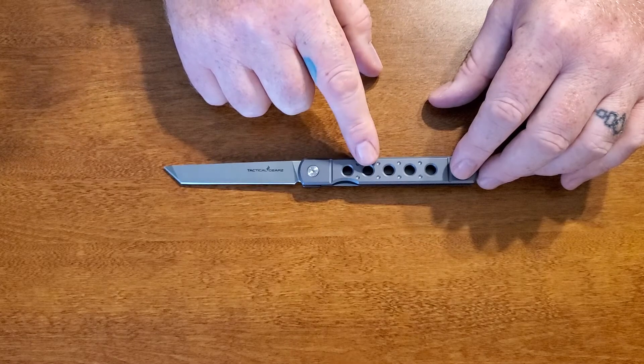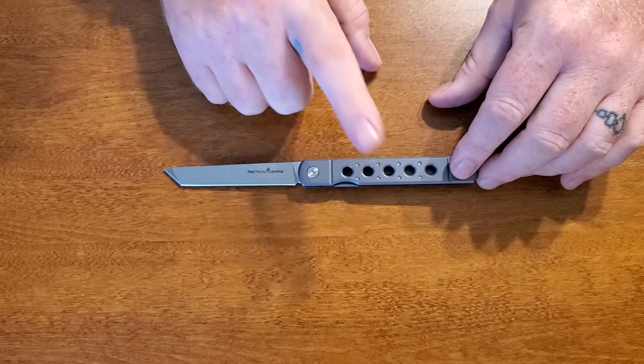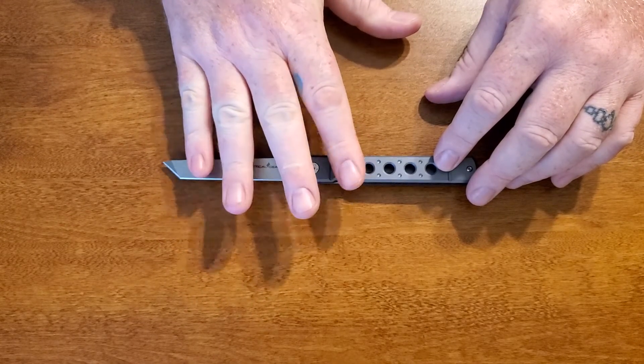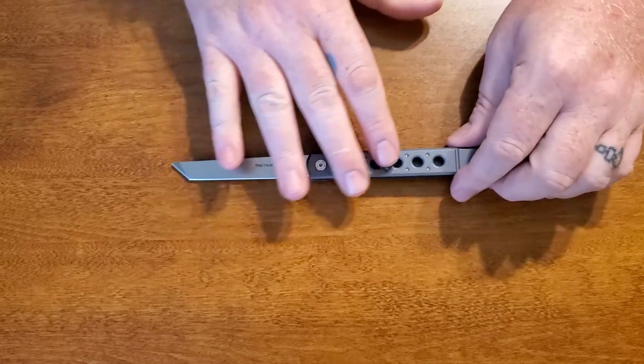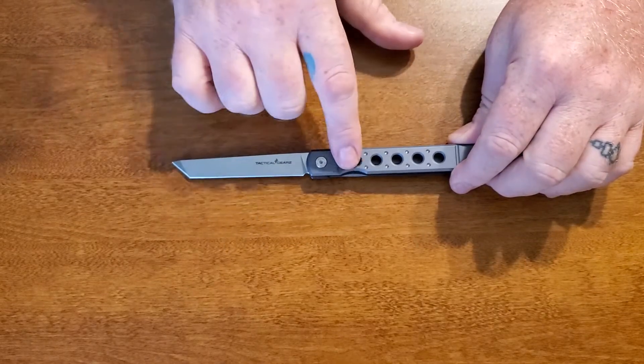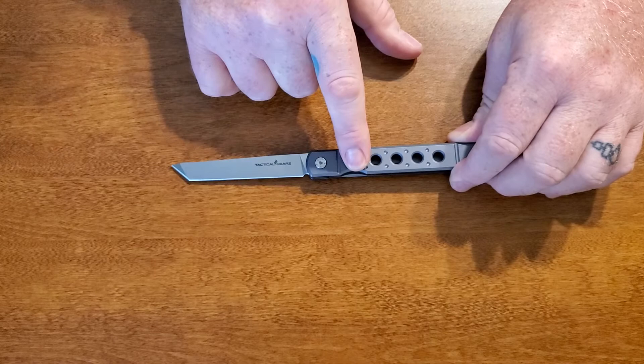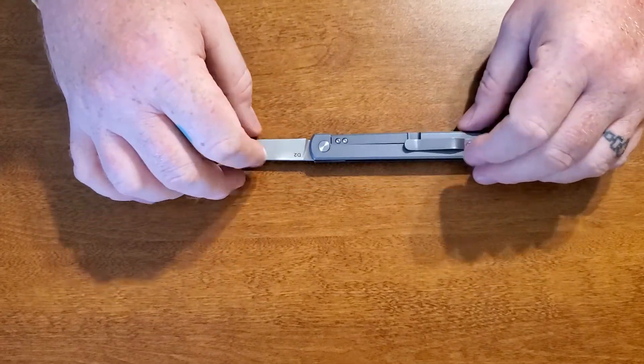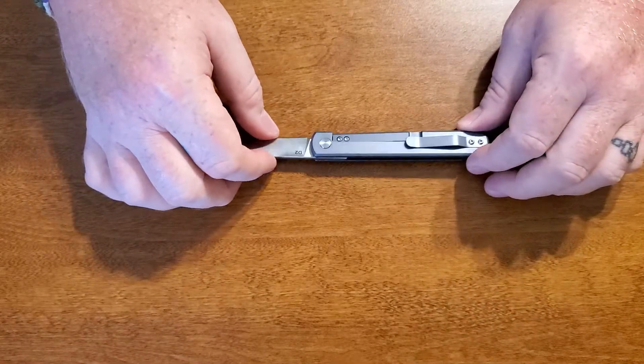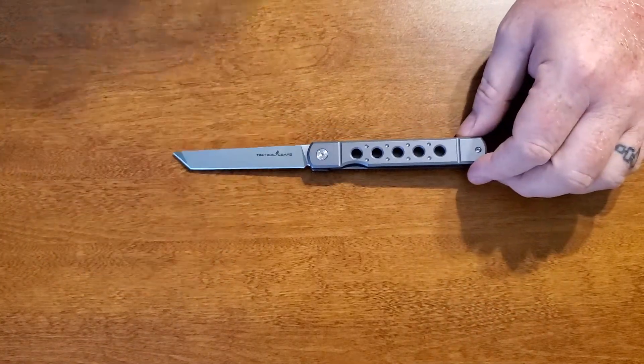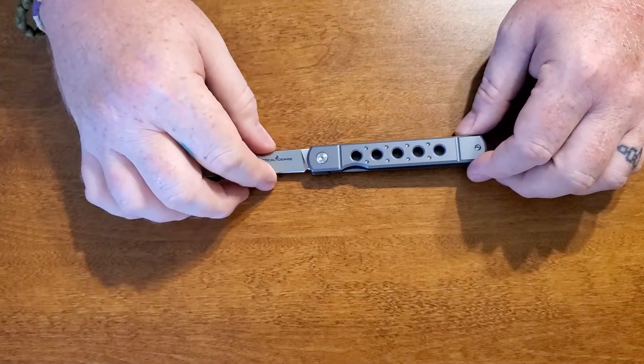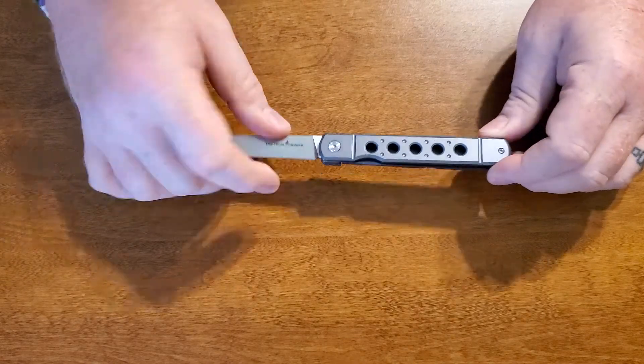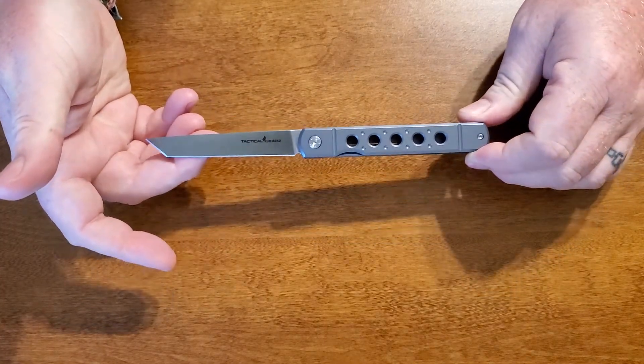The other thing that draws me to knives, and I don't know why, I'm just weird, is the lightning holes. This is done to lighten the weight of a knife or pretty much anything. Anything where they put holes in something to lighten the weight, it's called lightning holes. So I don't know why, but I'm always just kind of drawn to knives with lightning holes in them.